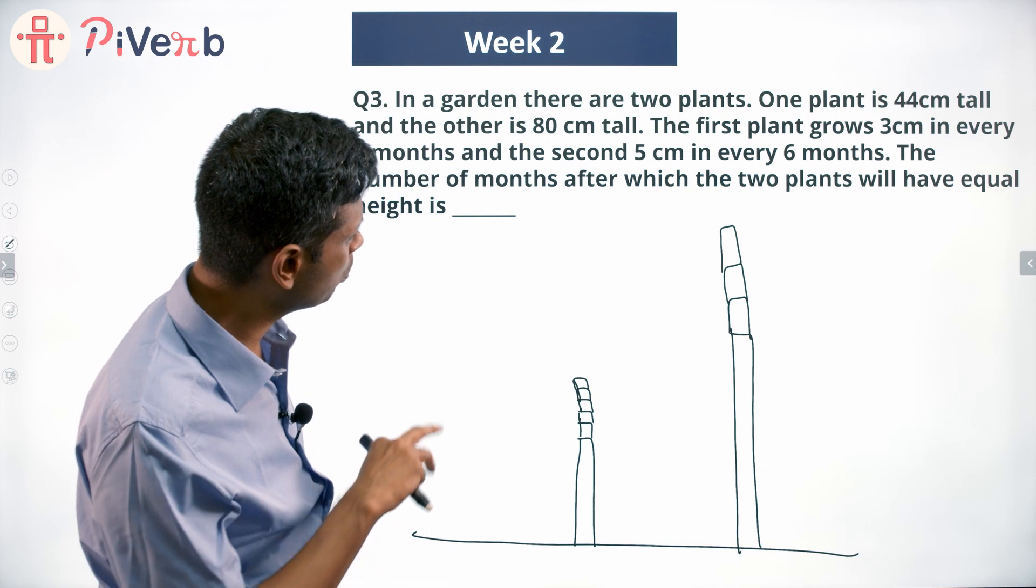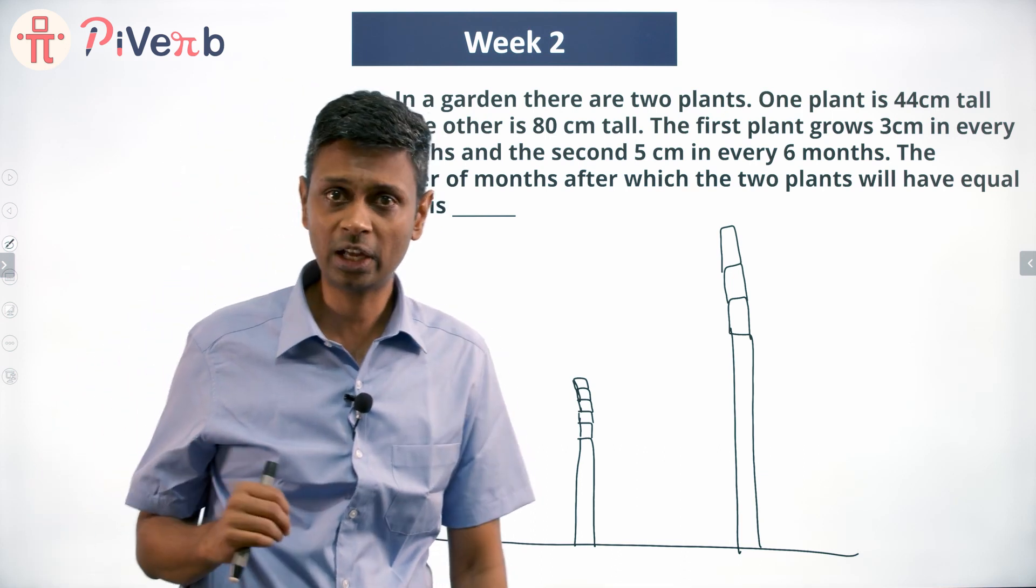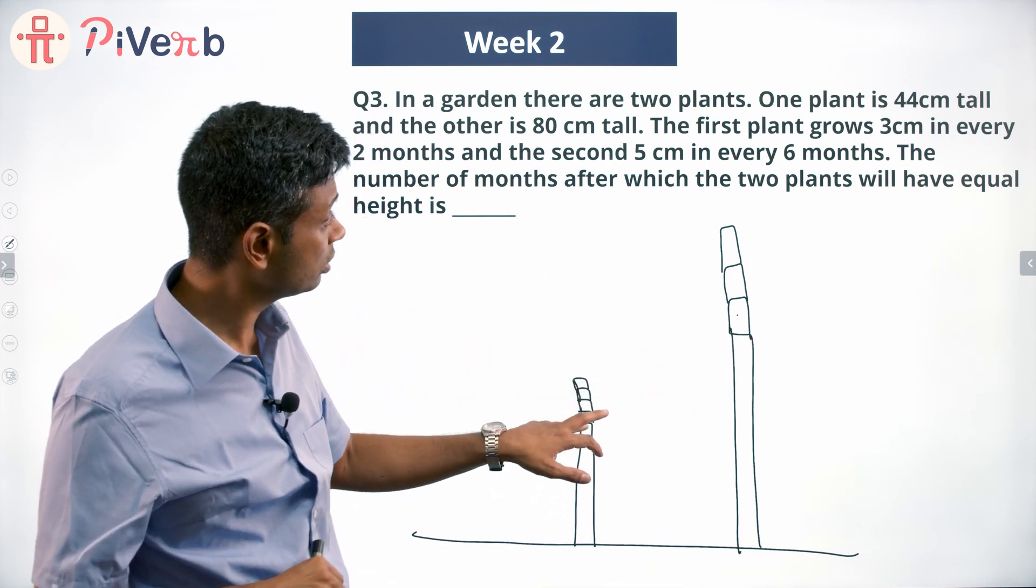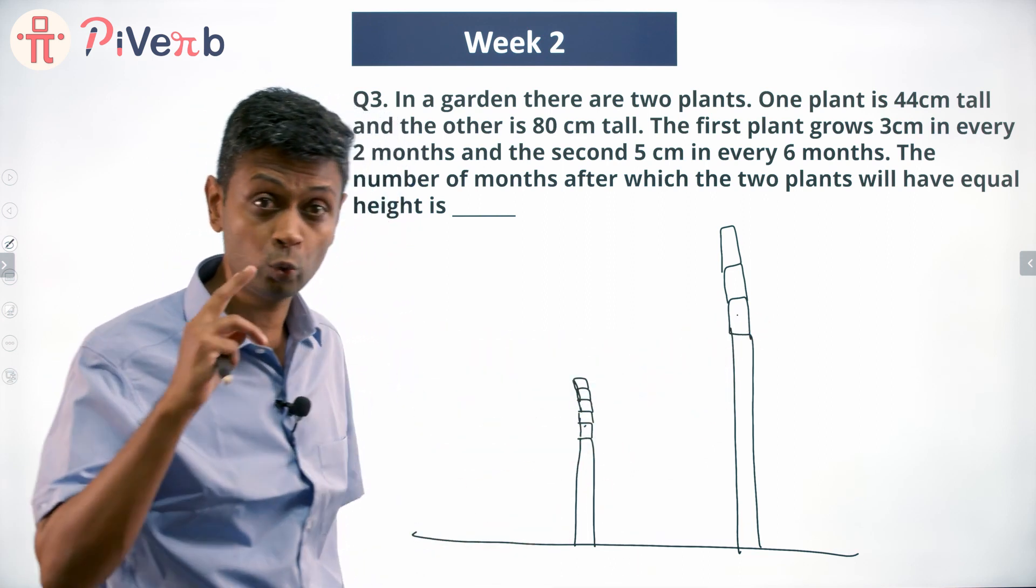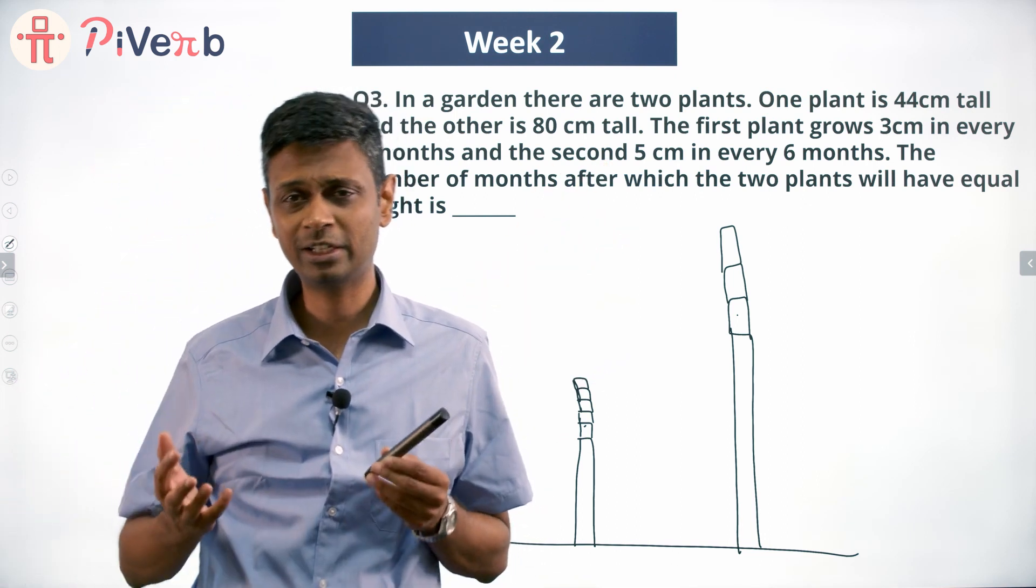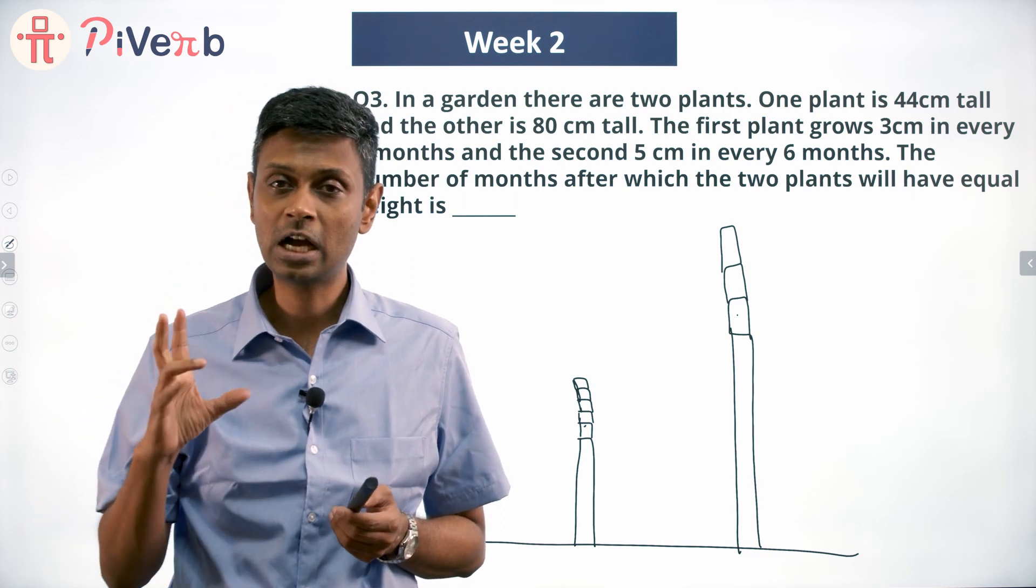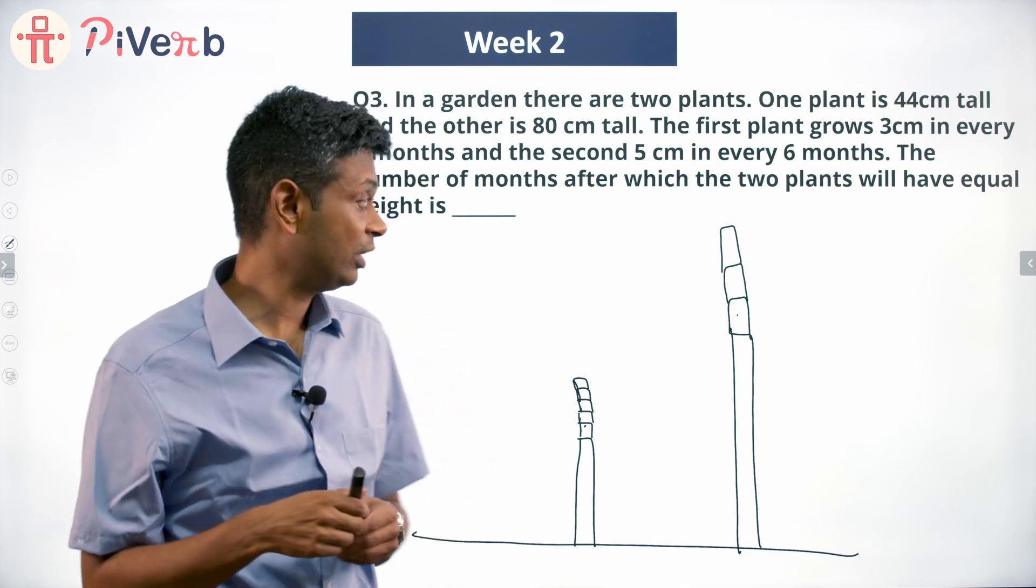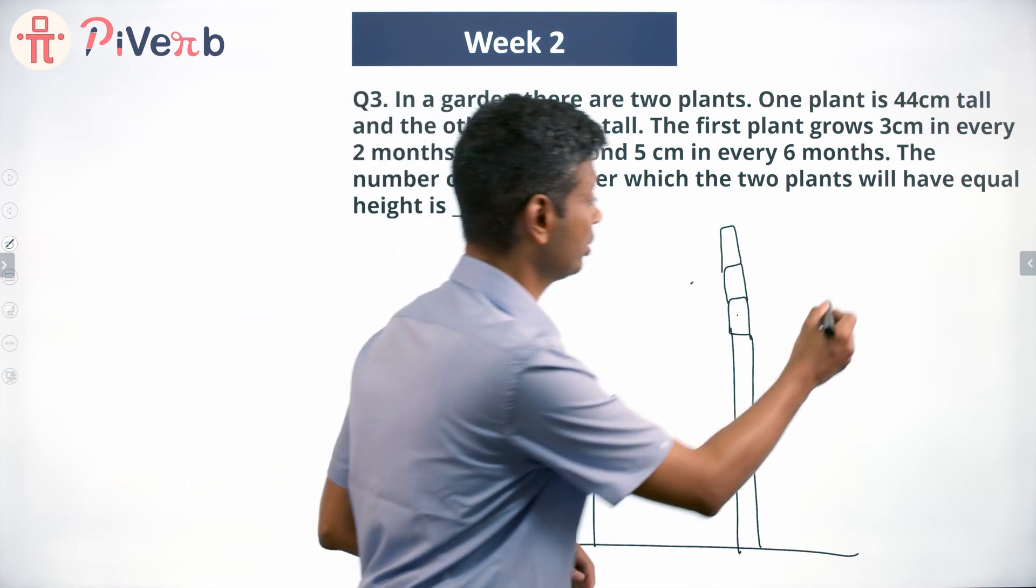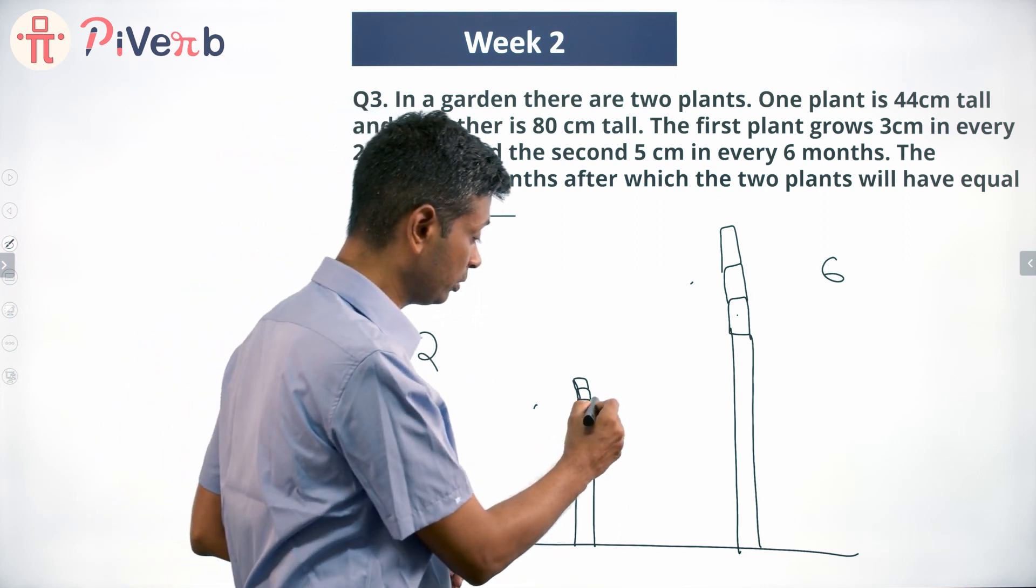The number of months after which the two plants will have equal height is - when will they have equal height? So this is 5, this is 2, this is 3 centimeters every 2 months, and 5 centimeters every 6 months. First thing to do is compare these two over the same set of time. This is every 6 months, this is every 2 months, so you have 3 sets of 2 months.